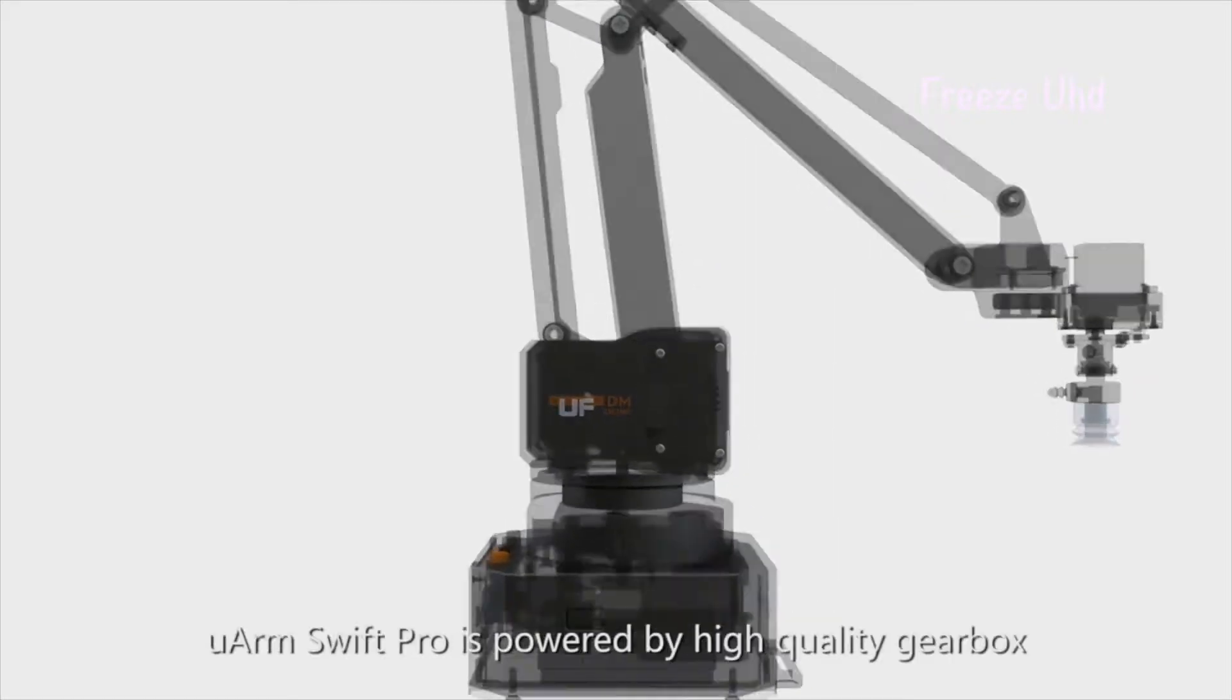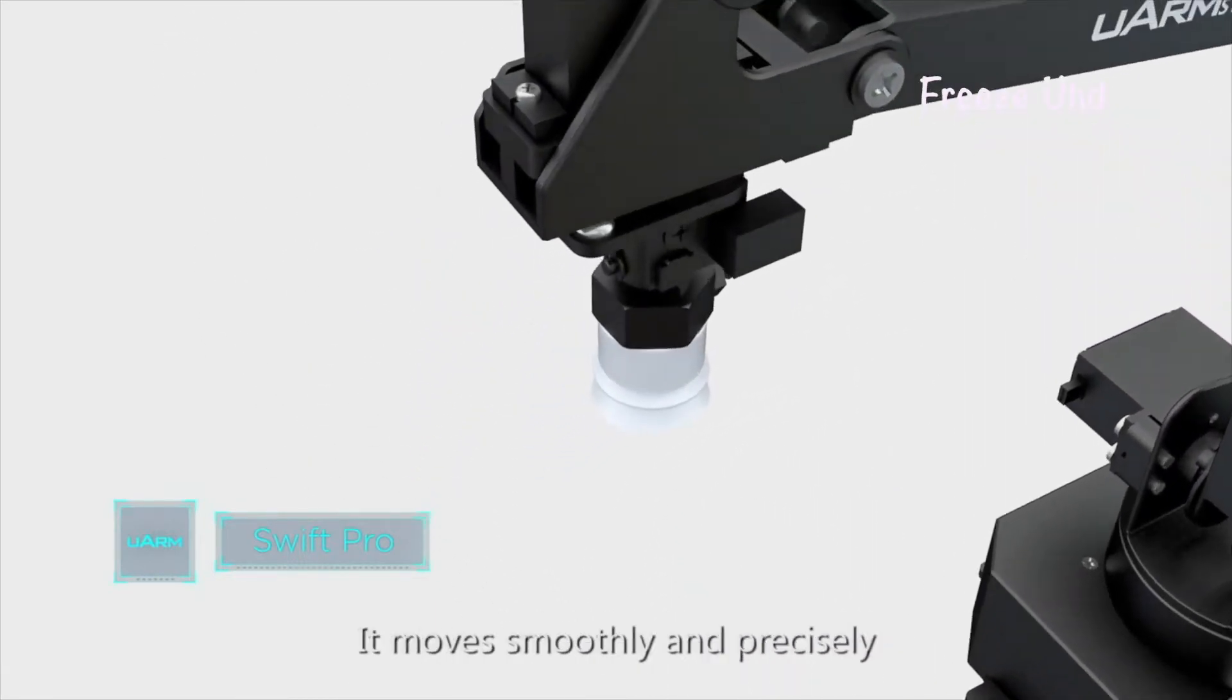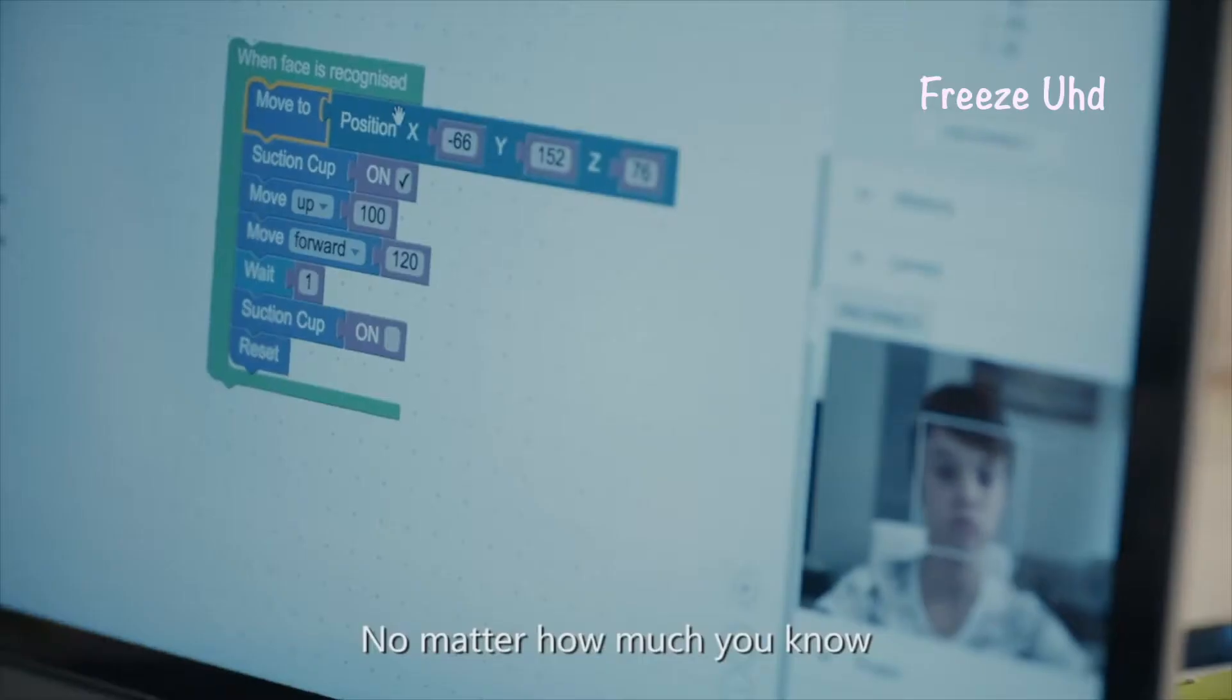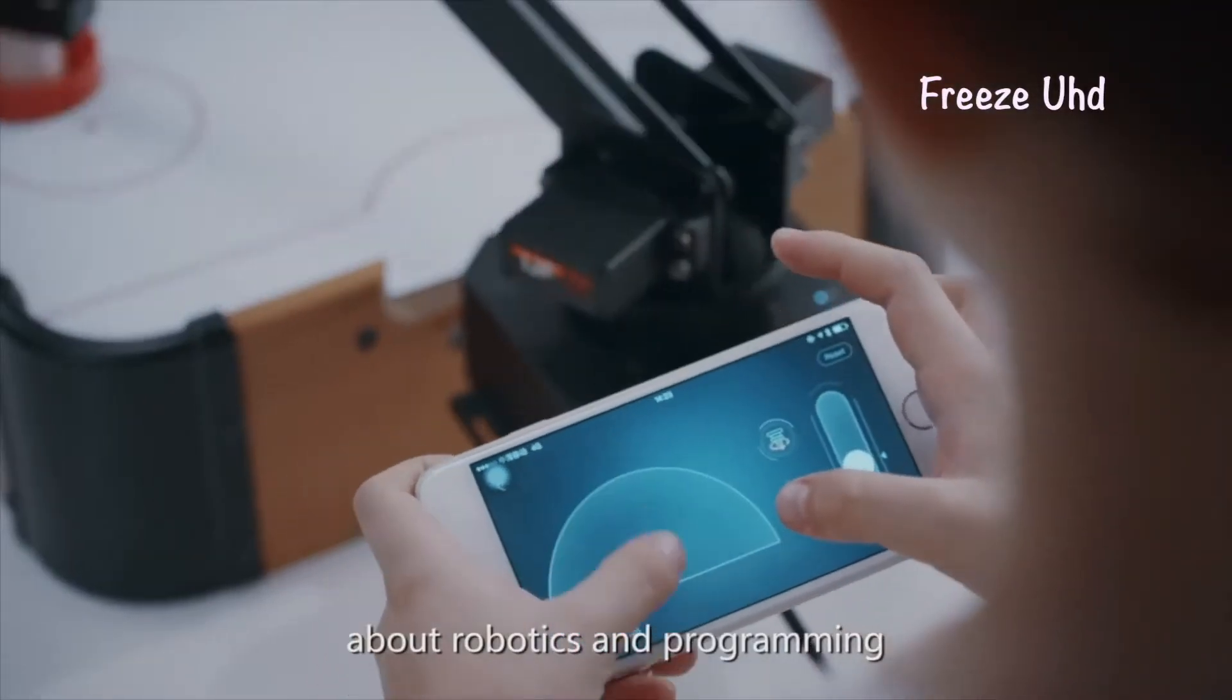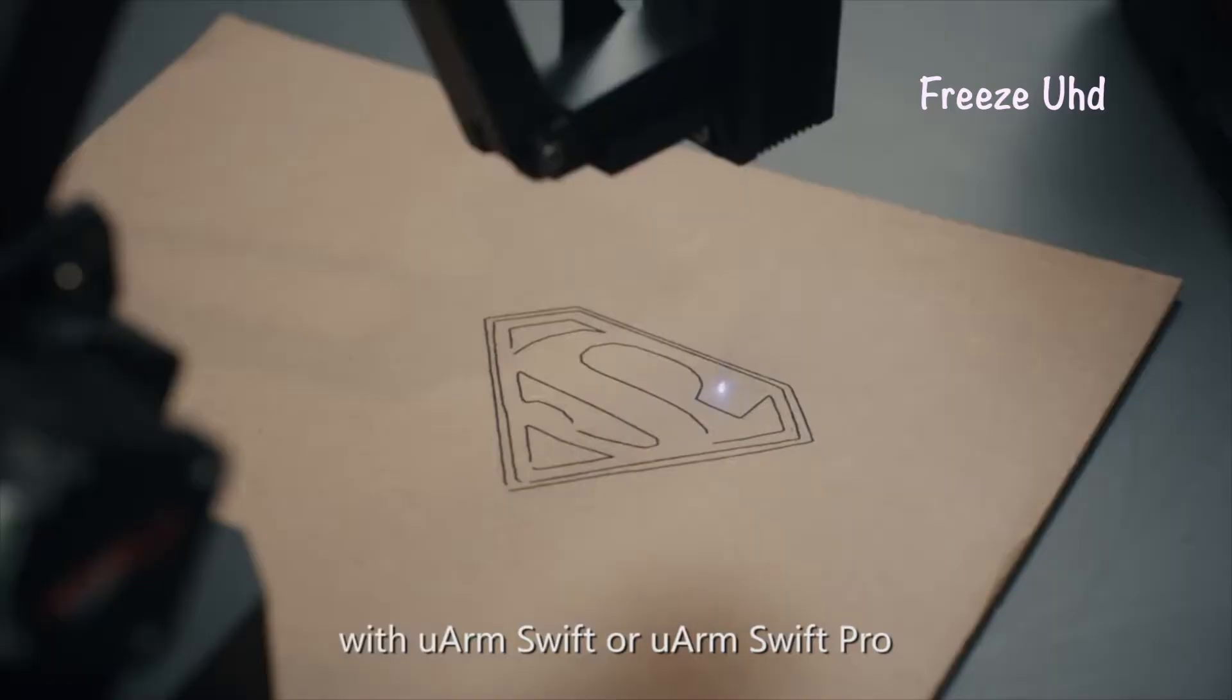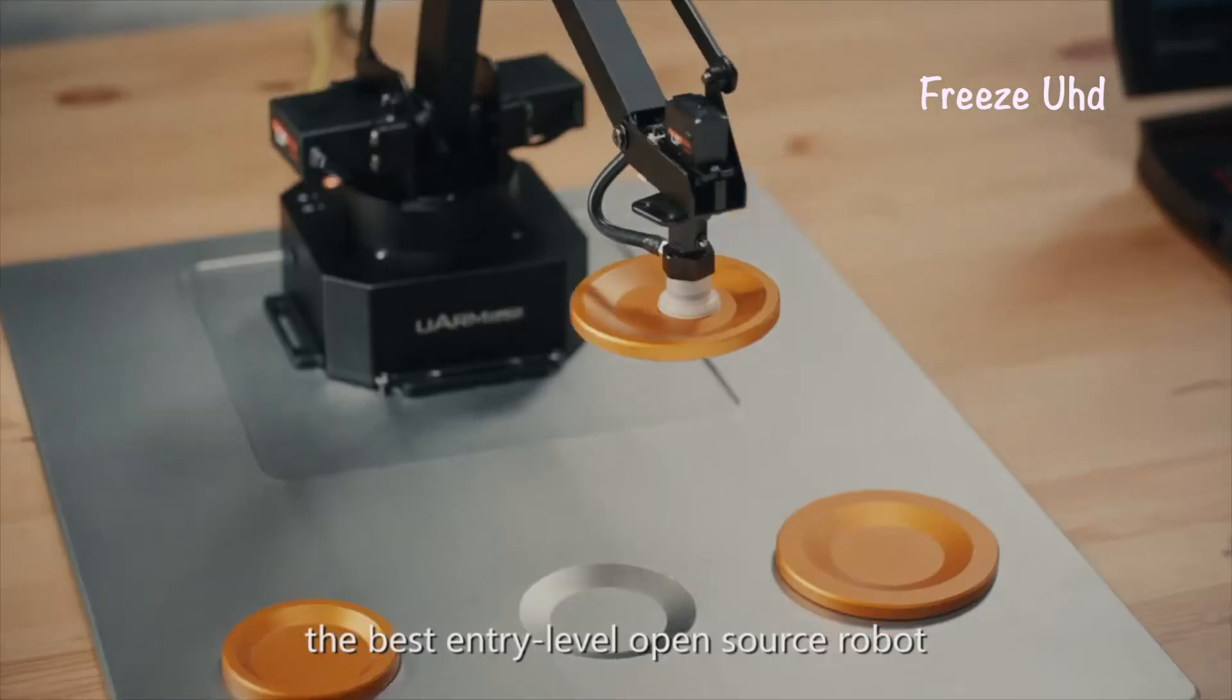Standardized plug-in makes it possible to switch between different end effectors within 30 seconds. Compared with U-Arm Swift, U-Arm Swift Pro is powered by high-quality gearbox with stepper motors. Combined with the 12-bit encoder, it moves smoothly and precisely. No matter how much you know about robotics and programming, you can always find something new to learn and play with U-Arm Swift or U-Arm Swift Pro, the best entry-level open-source robot.